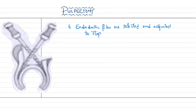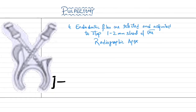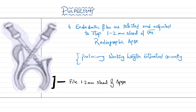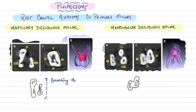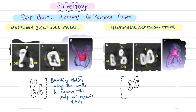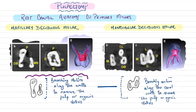Fourth step: endodontic files are selected and adjusted to stop 1 to 2 mm short of the radiographic apex — this is important in primary teeth because roots dissolve, causing continuous change of the apical foramen, so working length is estimated from pre-operative radiographs. Due to the complex anatomy of primary molar root canals, a brushing motion with endodontic files along canal walls is used to remove maximum pulp and organic debris.